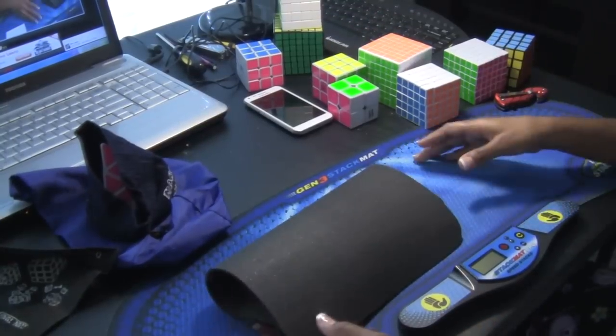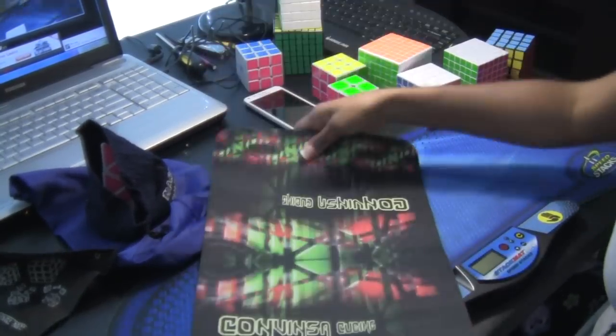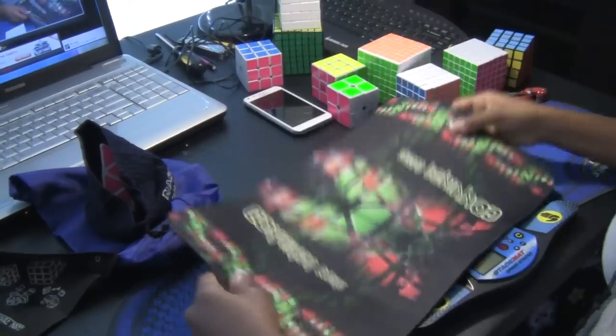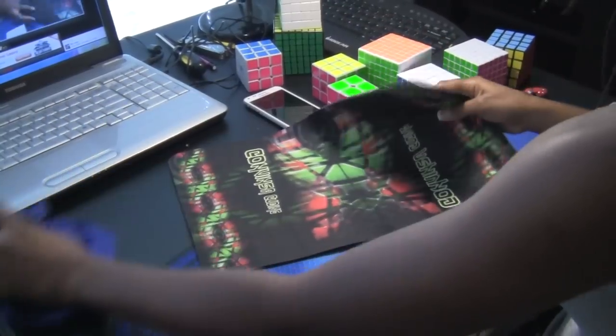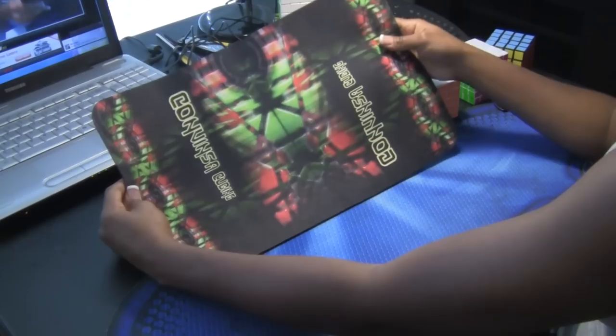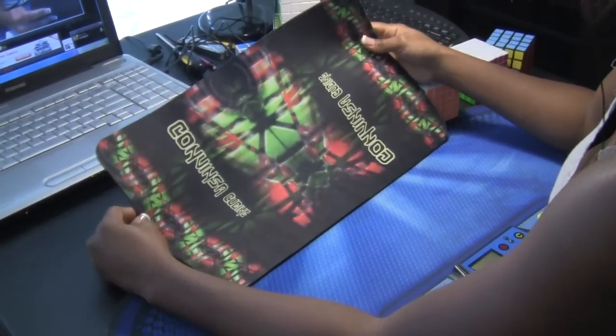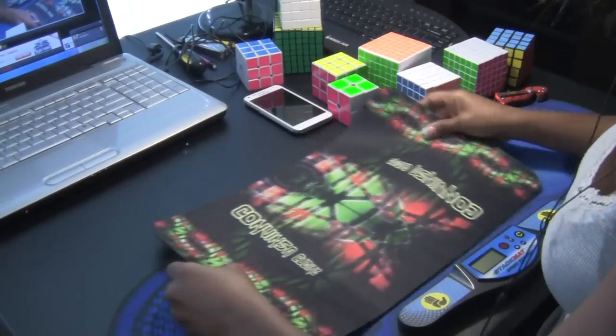Alright, here's the stat mat. And this is the design I chose. Okay, here we go. Can you see that? I'm trying to get the whole thing in the camera. There we go. That's the design I chose.